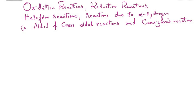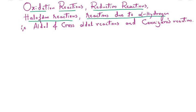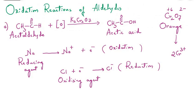Hello students, in today's class we are going to learn oxidation reactions of aldehydes and reduction reactions of aldehydes, followed by haloform reaction — which compound will be giving haloform reaction — and lastly the reactions due to the alpha hydrogen. That will be discussed in terms of aldol reaction, cross aldol reaction, and lastly the Cannizzaro reaction.